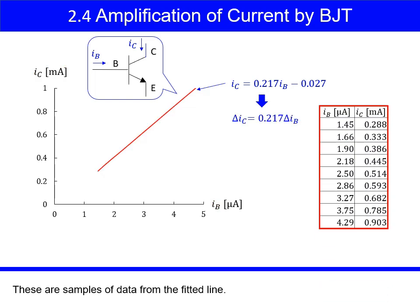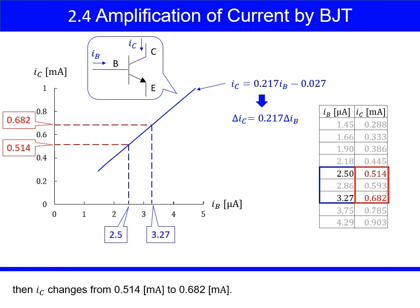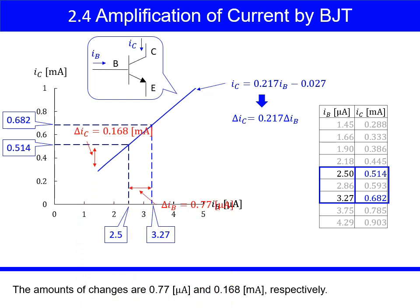These are samples of data from the fitted line. From the samples, we find that if Ib changes from 2.5 microamps to 3.27 microamps, then Ic changes from 0.514 milliamps to 0.682 milliamps. The amounts of changes are 0.77 microamps and 0.168 milliamps respectively.